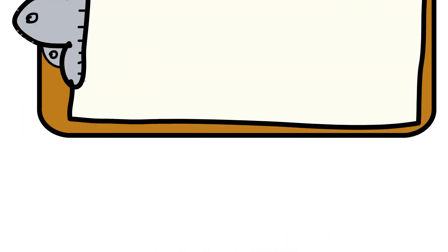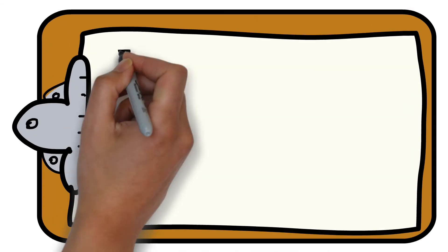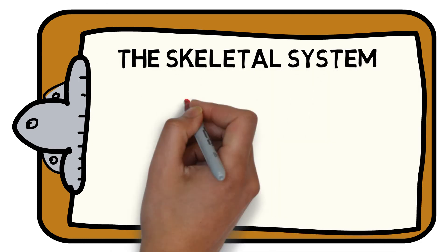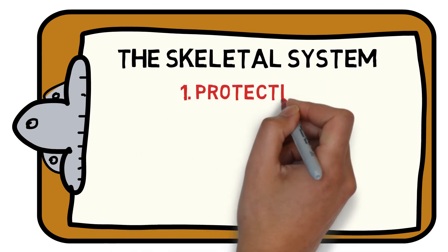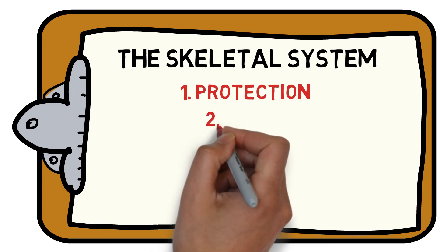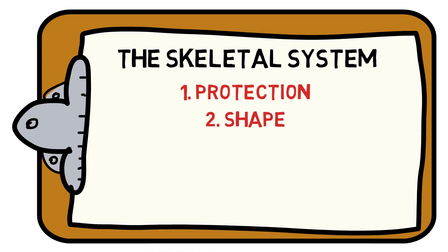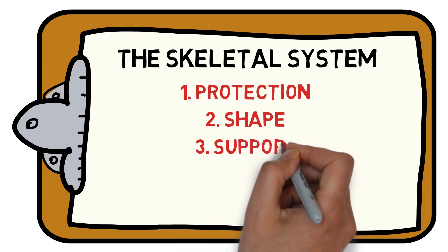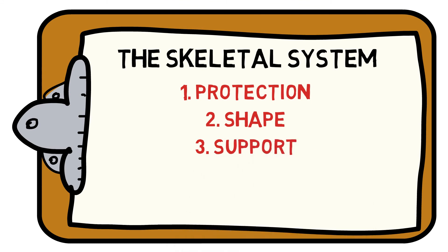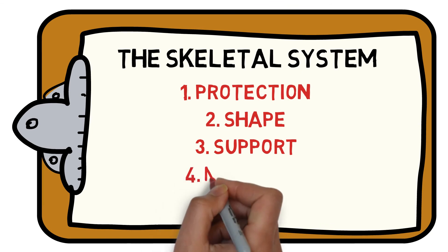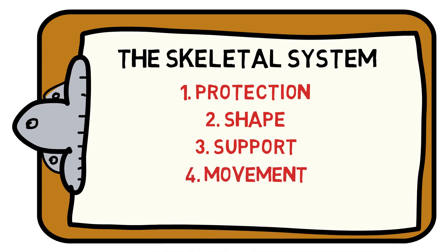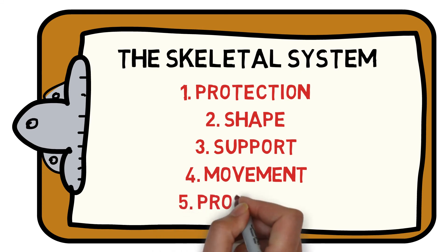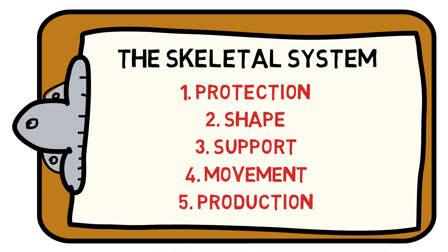Collectively, the whole skeletal system can provide a number of different functions. Protection to our vital organs, such as our ribcage or our skull. It provides our distinctive shape, and provides the framework for muscles and soft tissues to attach to. It keeps our organs in place whilst we move, and keeps us upright. It allows for all human movement using bones as levers when acted on by muscles. Production of red and white blood cells in our bone marrow.